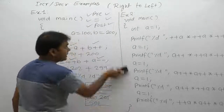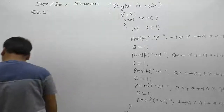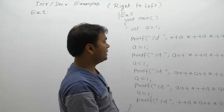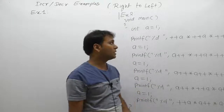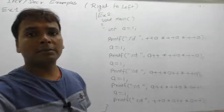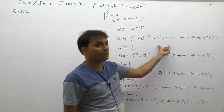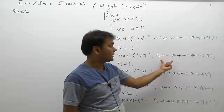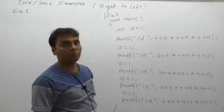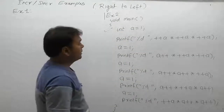Next, the second example. In the case of the second example, we are discussing more combinations of printf functions regarding increment operations. In the previous case, printf had multiple expressions. Here we are supplying only a single expression in each printf. The number of expressions is only one, so there is only one format specifier per printf.